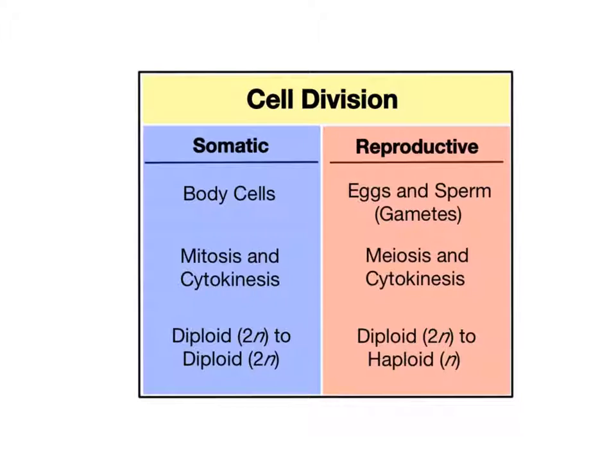In mitosis, cells are making copies of themselves, their DNA and cell structures, essentially cloning themselves. Epithelial cells are making new epithelial cells, cartilage cells are making new cartilage cells, without any variation.